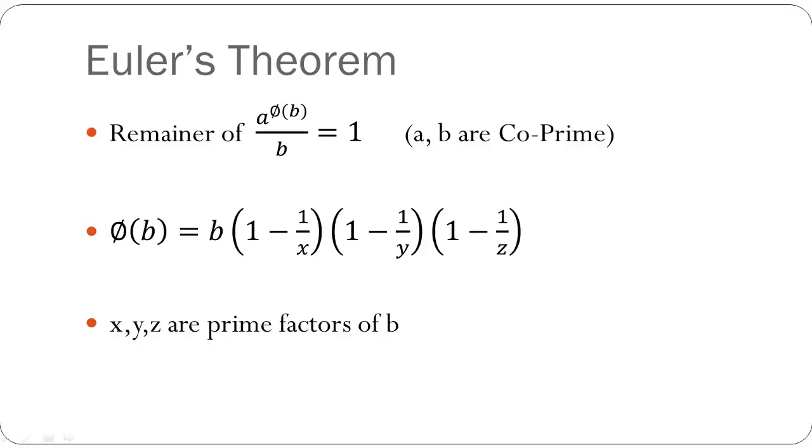So I repeat what Euler's theorem is. Whenever a and b are co-prime with respect to each other, then a raised to phi(b) upon b is equal to 1, where a and b are co-prime with respect to each other. That is, their highest common factor is 1. And phi of b is given by b times (1 minus 1/x) times (1 minus 1/y) times (1 minus 1/z) and so on till however many prime factors b has, where x, y and z are the prime factors of b.